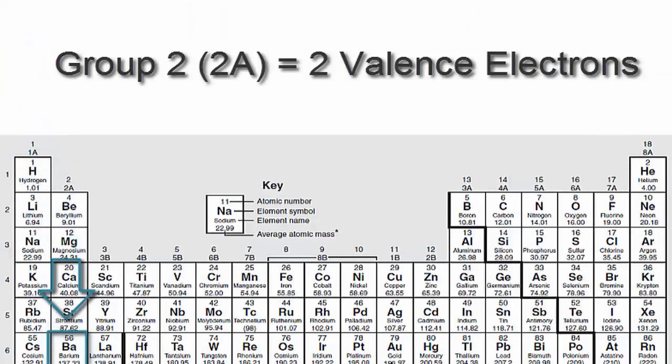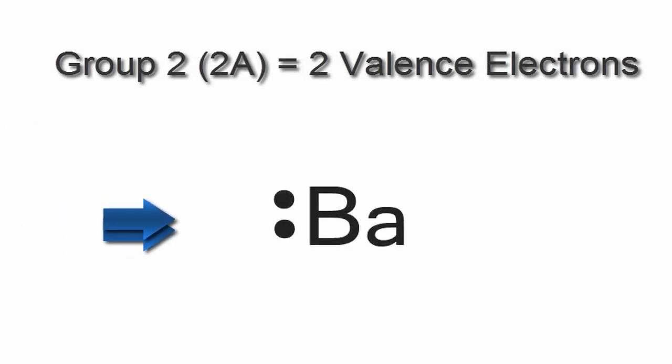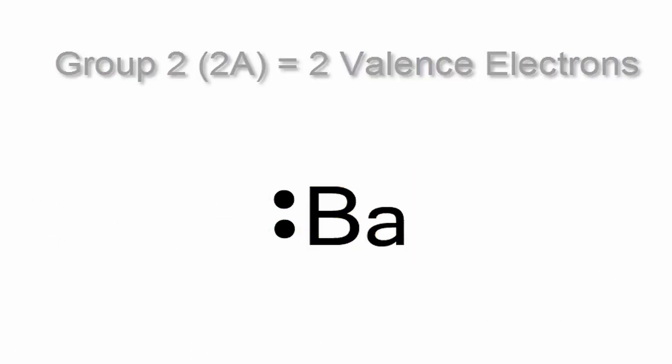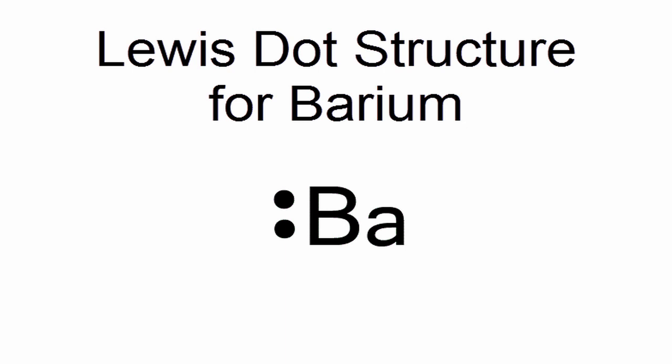Since barium is in group 2 or 2A, that means it has two valence electrons. We'll take those two valence electrons and put them next to the element symbol Ba for barium. So that's the Lewis dot structure for barium.